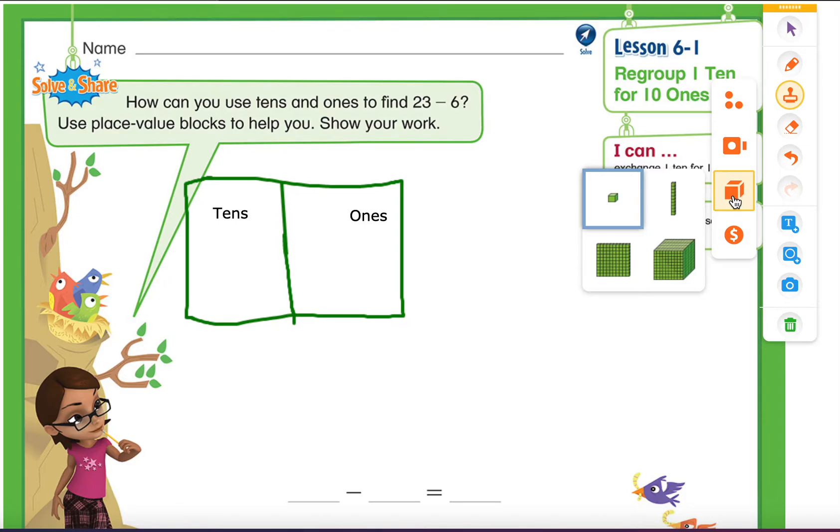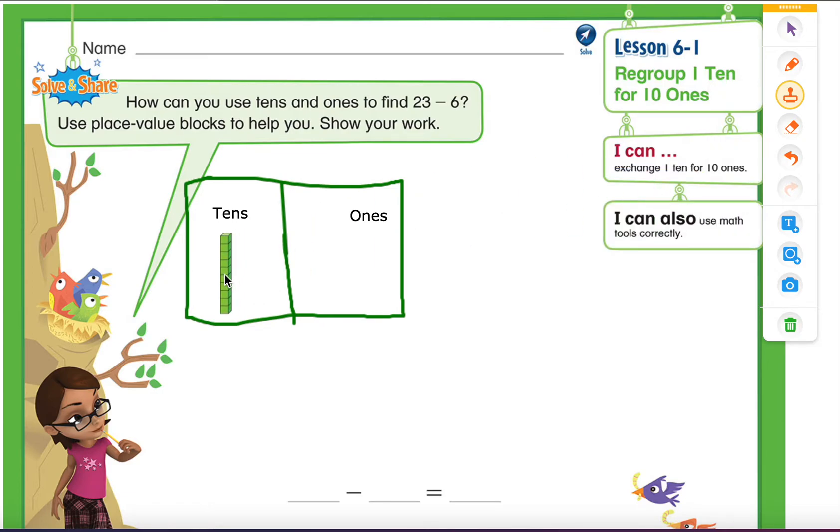So 23 has 2 tens and 3 ones. So let's grab our tens. 1 ten, 2 tens. Now, we're going to grab our ones. So 23 has 3 ones: 1, 2, 3.